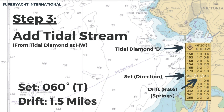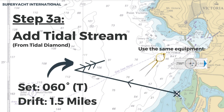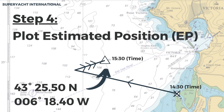Step 3: identify the tidal stream. This is found in the almanac or a tidal diamond. Tidal diamond B is used as this is closest. We are at high water and from the tidal data, we can see the set is 60 degrees and the drift is 1.5 miles. Add the tidal stream by drawing it on the chart using the data from the previous step. Use the plotter and divider to measure this out, then label this tidal stream with three arrows.